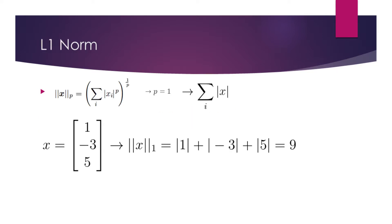We obtain the L1 norm by substituting p with 1. On an intuitive level, the resulting formula simply implies to sum the absolute values of all elements. Let's do an example. Consider the vector x. To find the L1 norm of this vector, we have to sum the absolute values of its elements. This is a very simple addition resulting in 9.